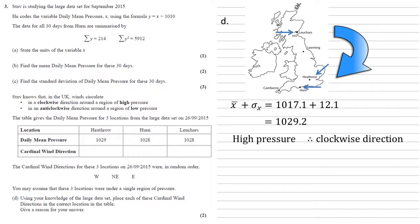Now to match up with the cardinal wind directions. These are the directions that the wind is coming from. Looking at the arrows we've just added, putting the information to our table: Heathrow is going to be northeast, Hearn is coming from the east, and Luchers is coming from the west.